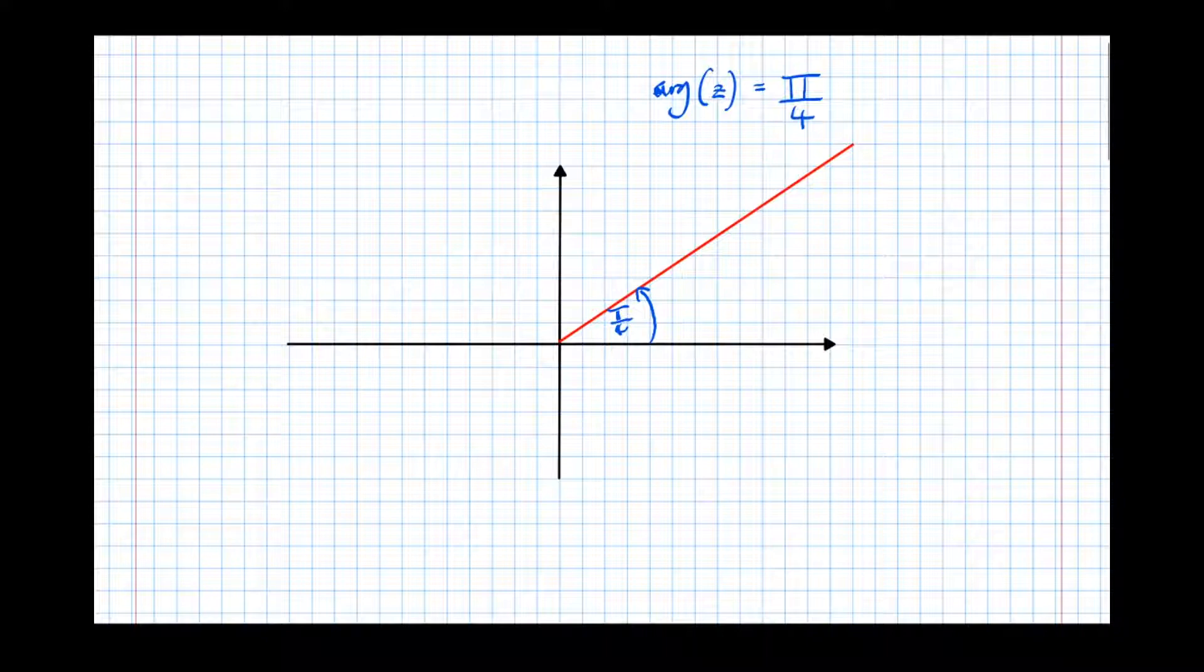So a full line will be an infinitely long line that goes in both directions. A half line basically cuts off at a point. So in this case, it cuts off at the origin.